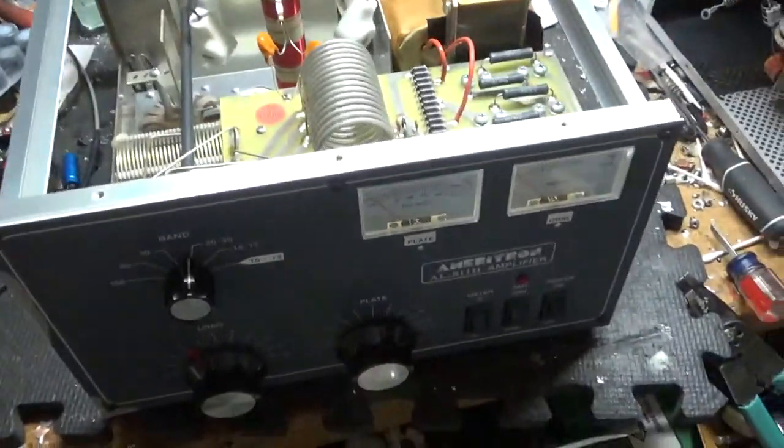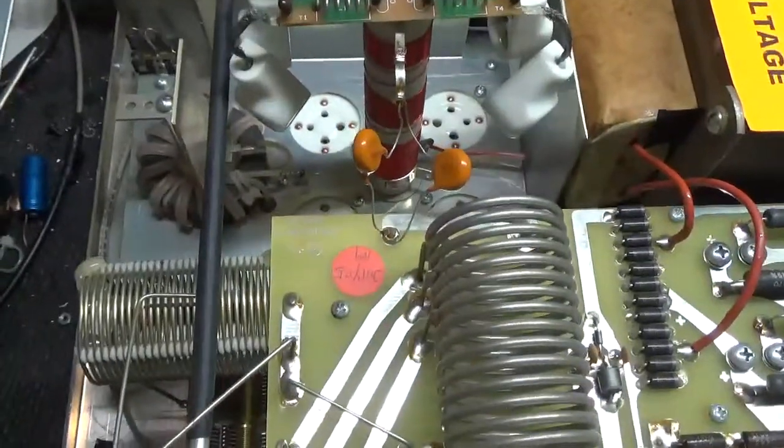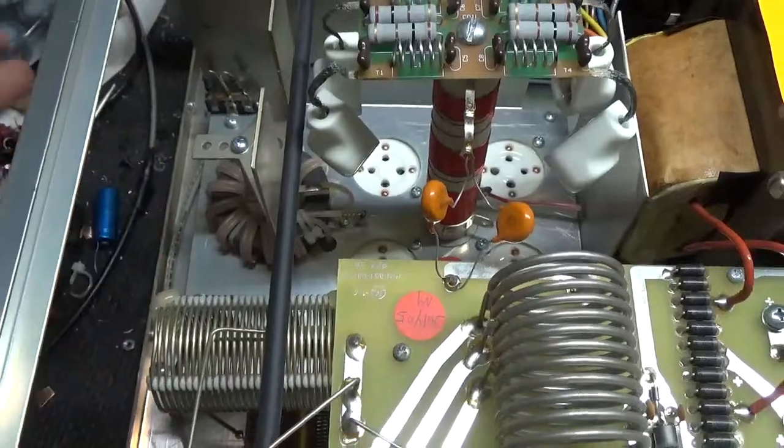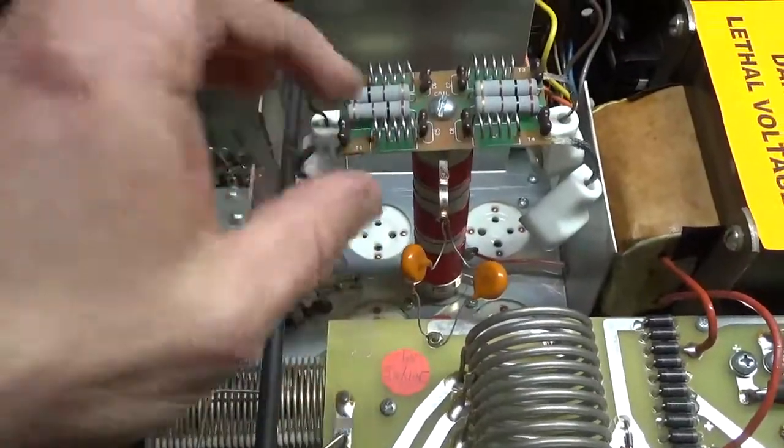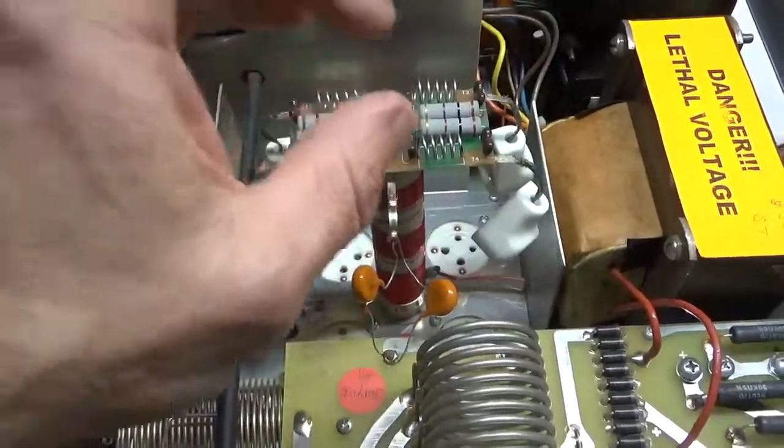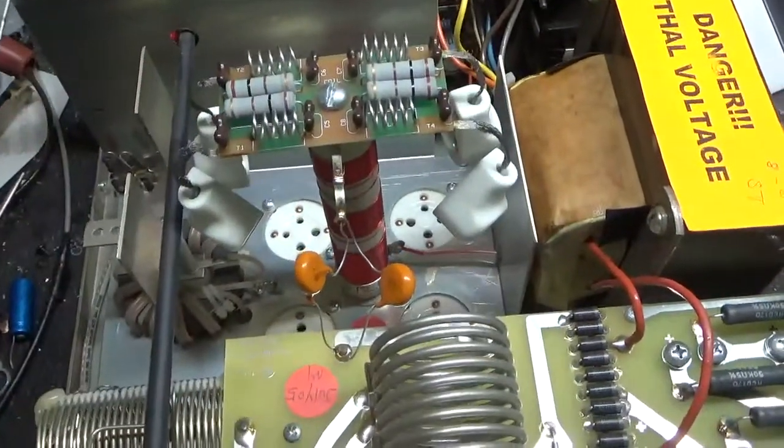I gave it a quick look over. The grids are not grounded. I'm going to go ahead and ground them. I'll remove the grid loading resistors, directly ground the grid. Each tube has one grid, one connection, one pin per socket. I'll connect them directly to ground like you've seen in other videos that I've made.